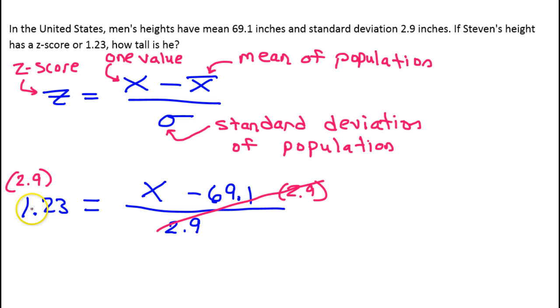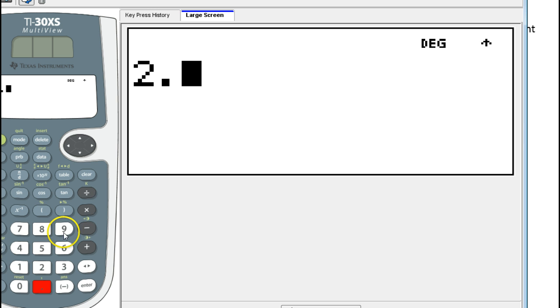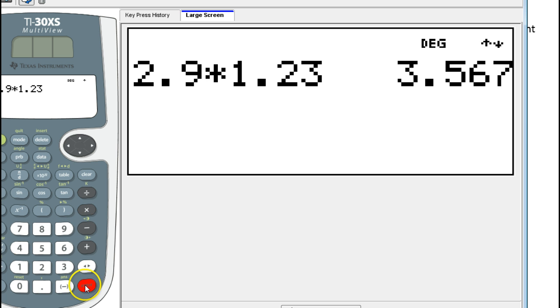So let's see, 2.9 times 1.23. 2.9 times 1.23. So that's 3.567.